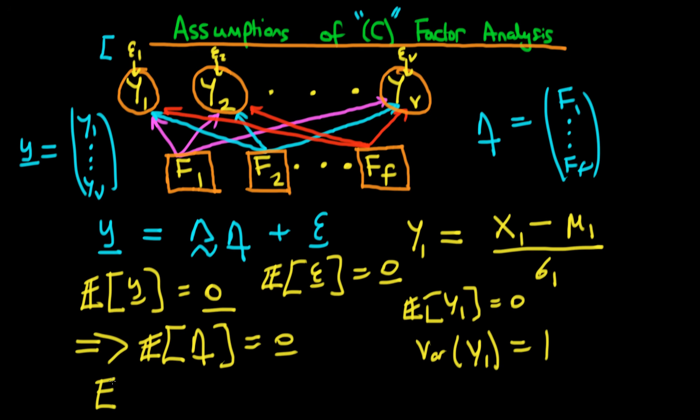The final assumption is that the expectation of eta times epsilon transposed is equal to zero. Well, what does that mean? Well, it means that there is no covariance between our underlying factors and our disturbance term epsilon. So what's the intuition behind this specific assumption? Well, what it says is that after we have controlled for our underlying factors, which are contained in our vector eta, then there is a sort of residual component of the variance of y, which is due to factors which are in no way related to those underlying factors. So it's kind of like an idiosyncratic error.